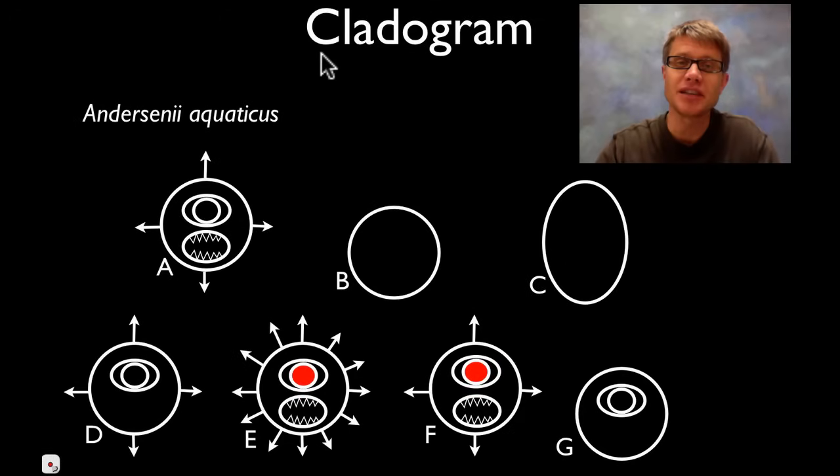Hi, it's Mr. Andersen. In this podcast I'm going to talk about the cladogram. A cladogram is essentially taking characteristics that are shared by organisms and putting together a hypothesis of how you think they may be related. Or a phylogenetic tree. It's not a phylogenetic tree, it's just a guess at how that might occur.